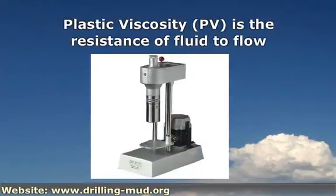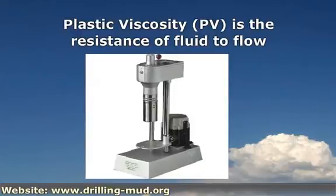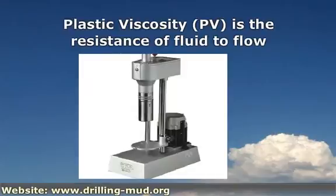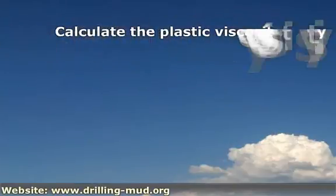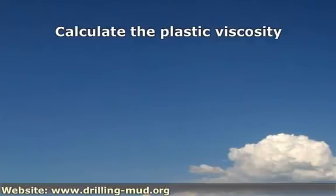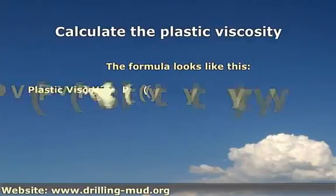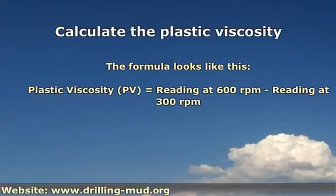Typically, the viscometer is utilized to measure shear rates at 600, 300, 200, 100, 6, and 3 revolutions per minute. We can calculate the plastic viscosity from the difference between the 600 and 300 RPM reading. The formula looks like this: plastic viscosity equals the rating at 600 RPM minus the rating at 300 RPM. The unit of plastic viscosity is centipoise.